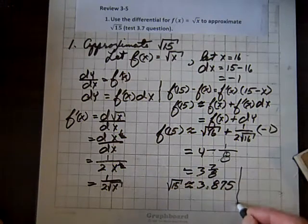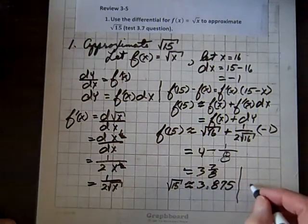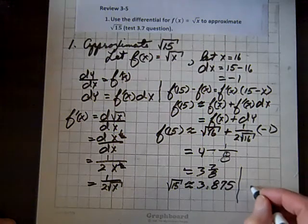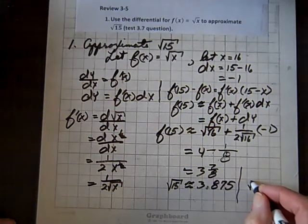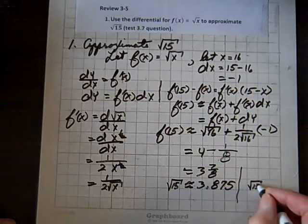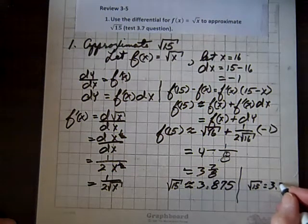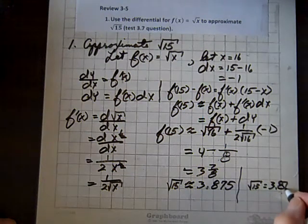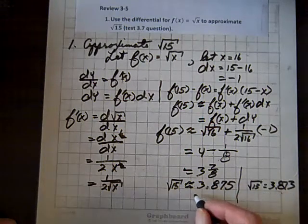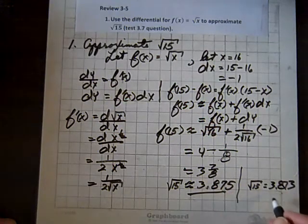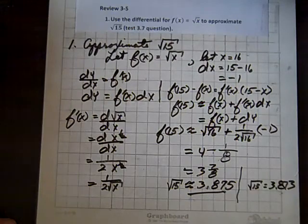The actual value, if you round and run this through a calculator, you get the square root of fifteen equals three point eight seven-three. Here's our approximation. Look how close it is. Isn't that great?